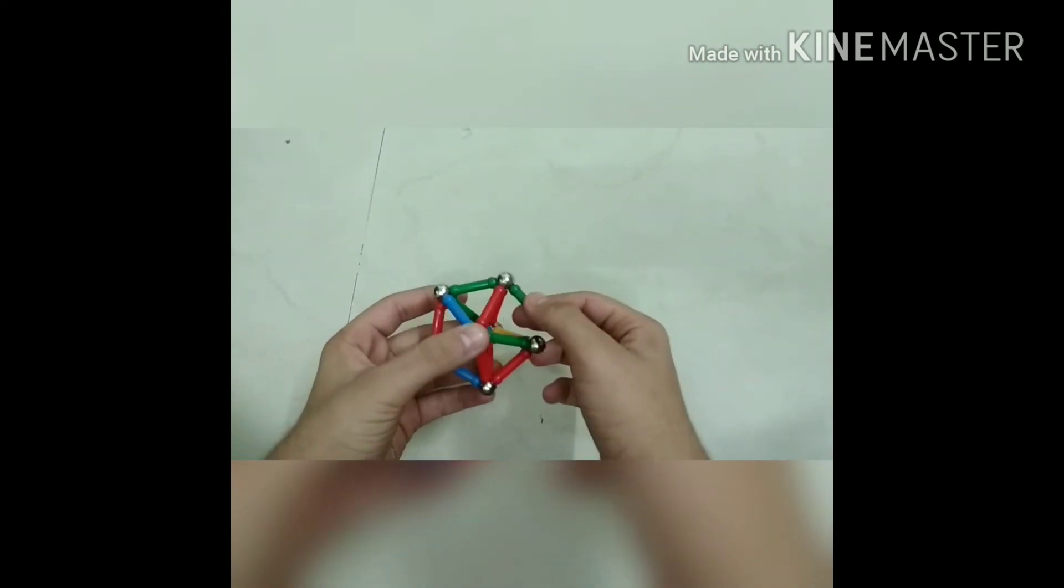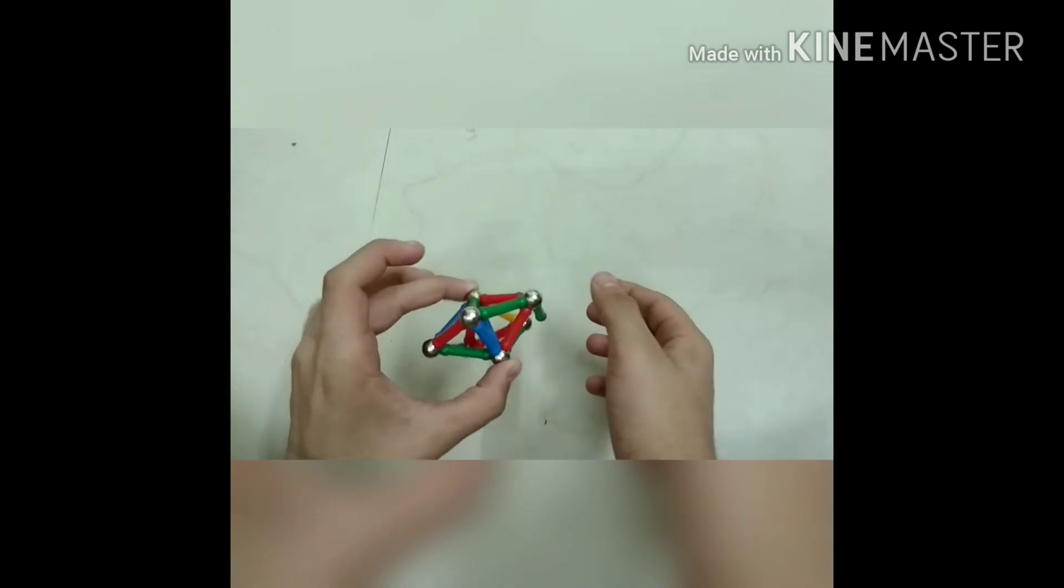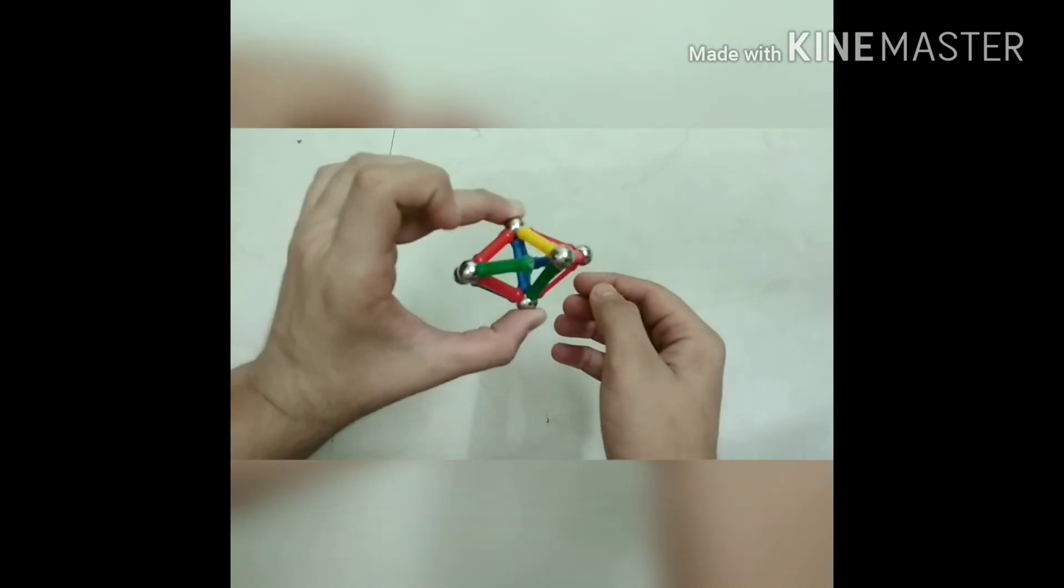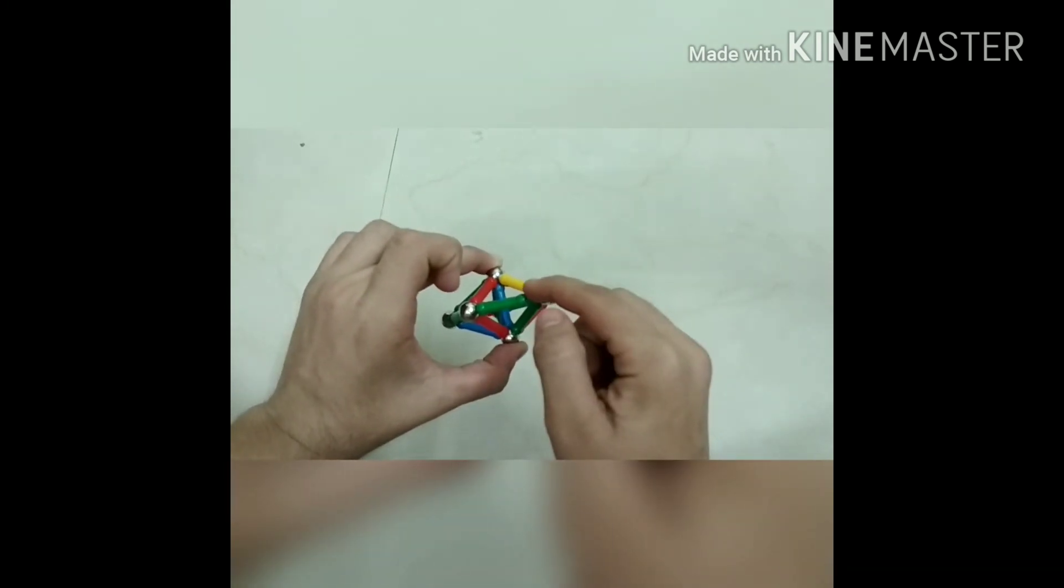So when I push this, it will just detach 1 magnetic stick here and not crush the entire pentagon. So as you can see here, I am applying all my force and still it is stable and sturdy and is not crushing under the weight of my fingers.